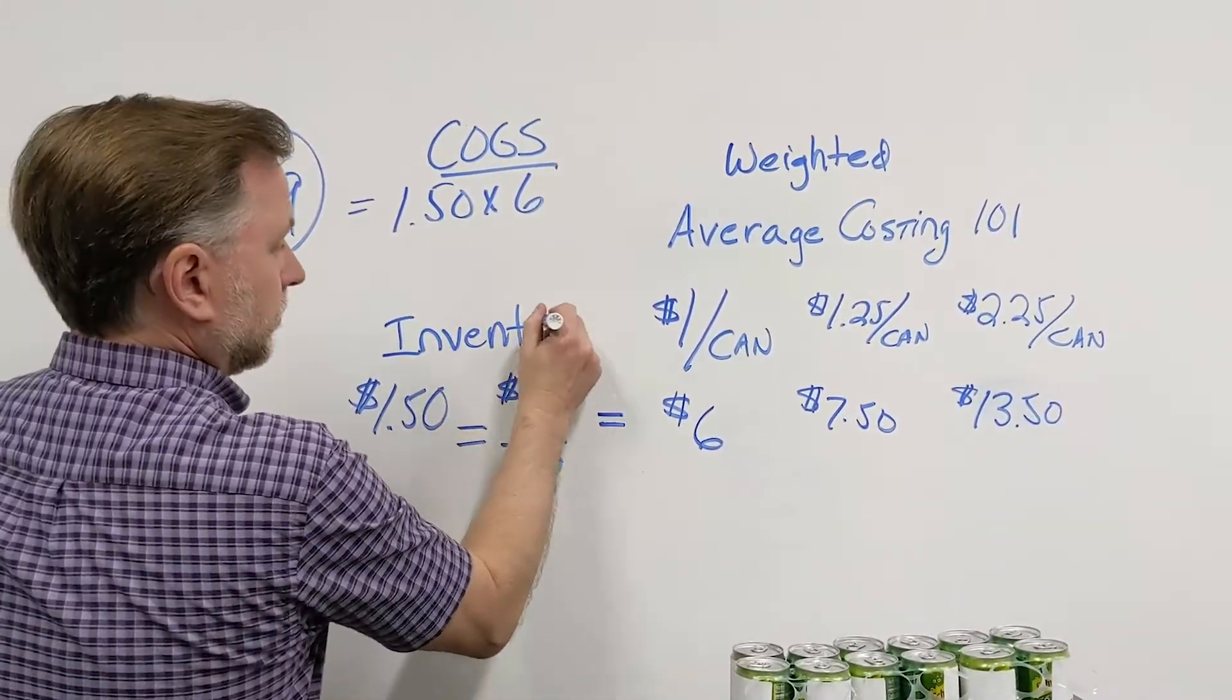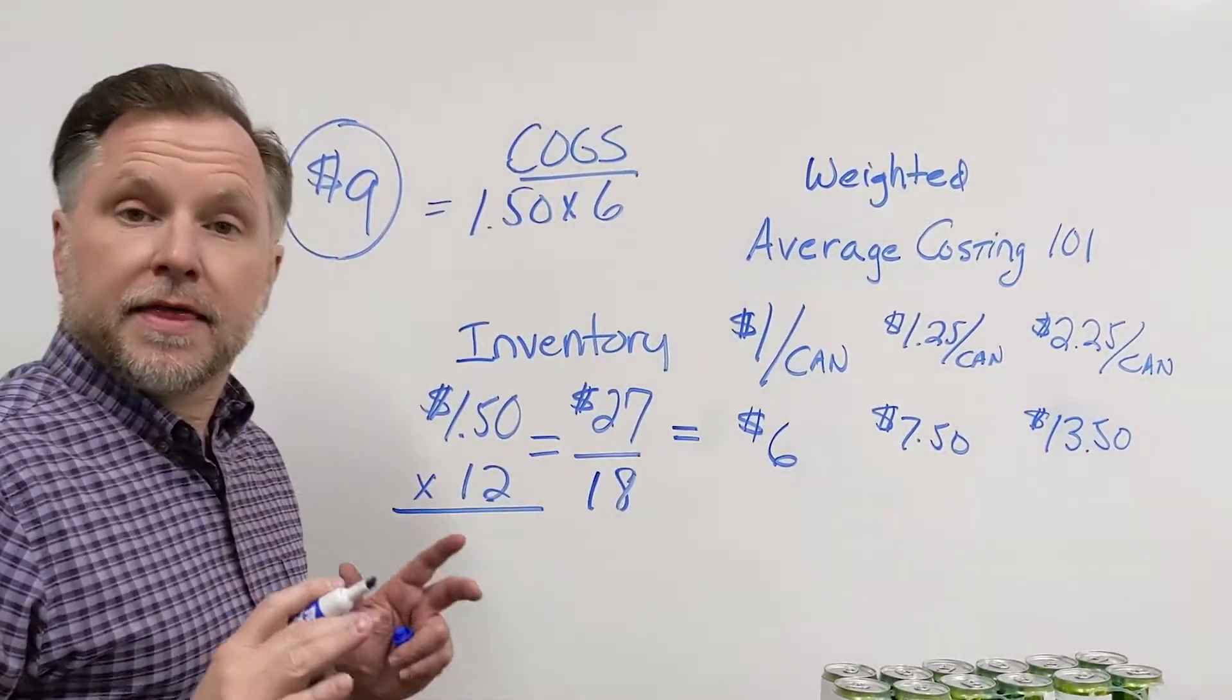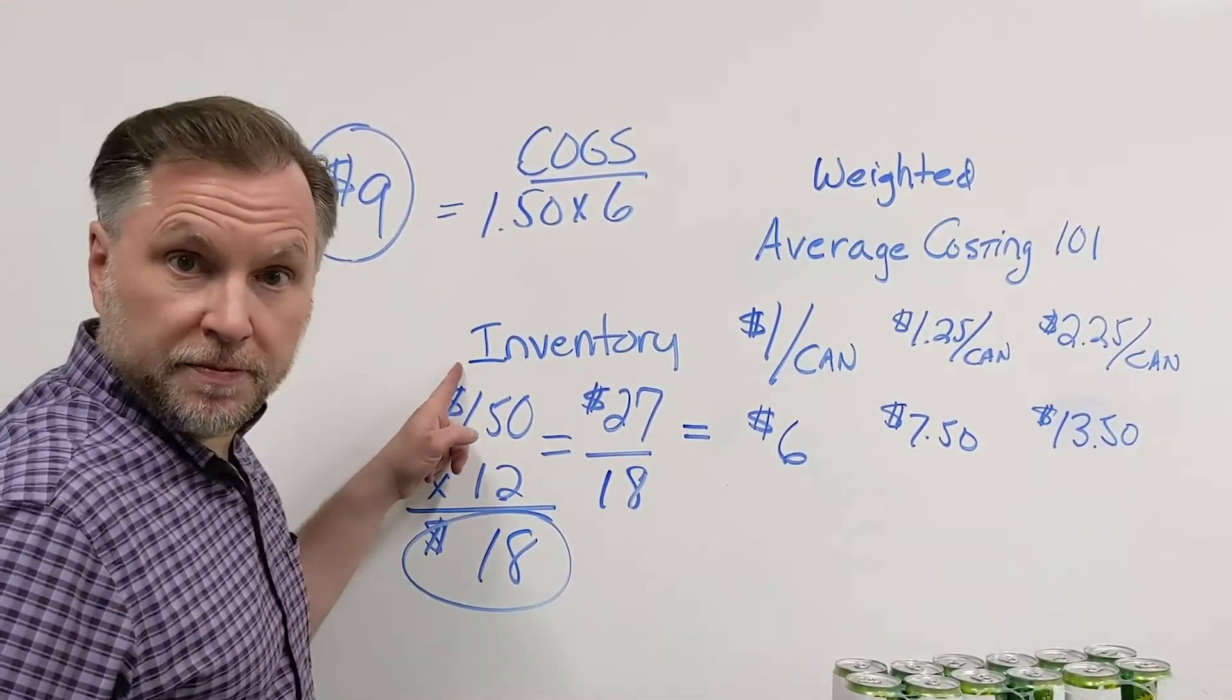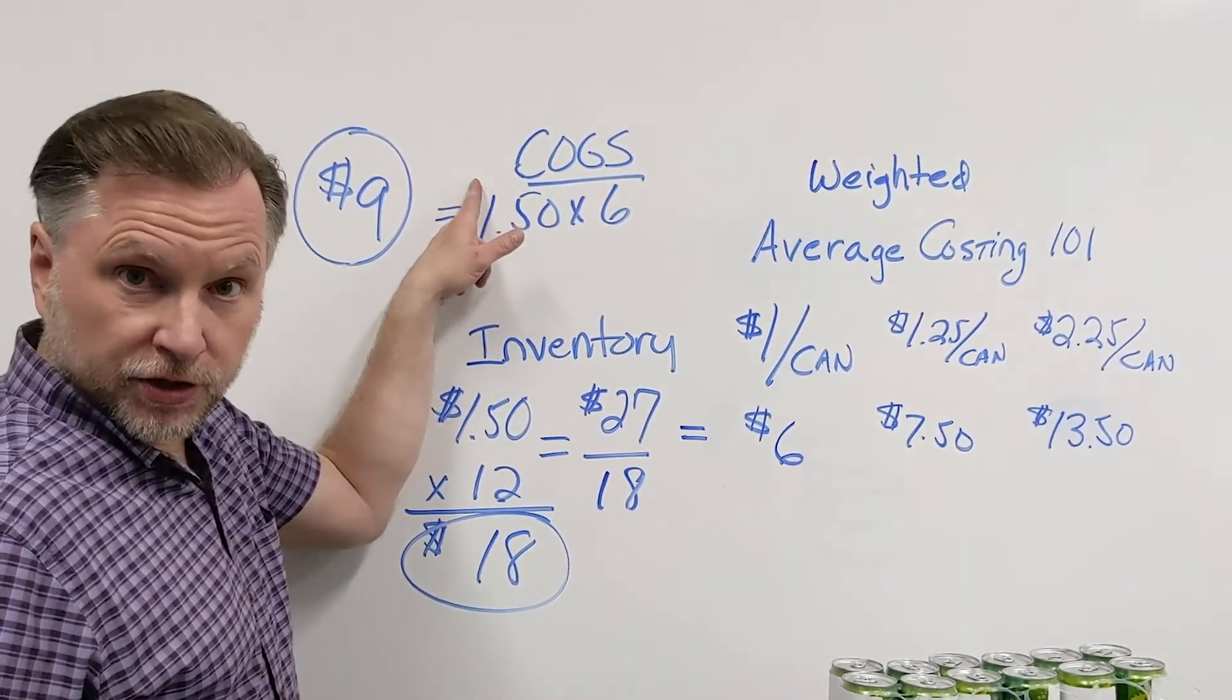As for our inventory, we have 12 cans left. That means we have $18 of inventory remaining on our balance sheet and $9 has gone to cost of goods sold.